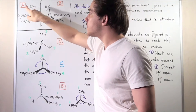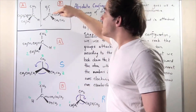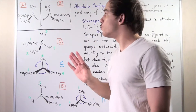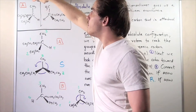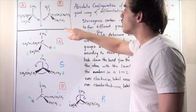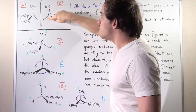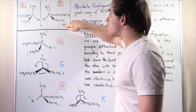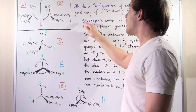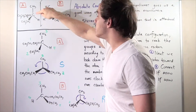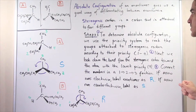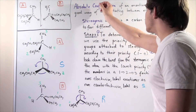Before we attempt to find the absolute configuration, we have to find our stereogenic carbon on our enantiomer. On compound A, this carbon is our stereogenic carbon, because it's attached to four different groups: the H group, the methyl group, the ethyl group, and the propyl group. The same goes for enantiomer B — we have our H group, the methyl group, the ethyl group, and our propyl group. So now we've found our chiral carbon, or stereogenic carbon, in the middle.